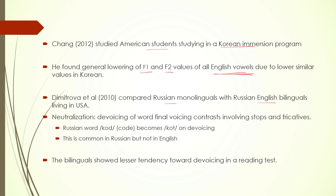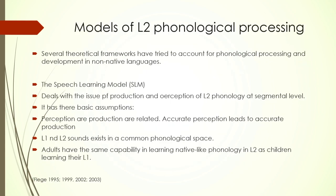Another study compared Russian monolinguals with Russian-English bilinguals living in the USA. In Russian, neutralization — the devoicing of word-final consonants — commonly happens: for example, the word 'kod' (C-O-K-O-D) becomes 'kot', with D transferring to the T sound. This involves stops and fricatives both in Russian but does not happen in English. The bilinguals showed less tendency towards devoicing in a reading test compared to Russian monolinguals — meaning something that is a standard feature of Russian phonological system was found to be affected by the L2 property.